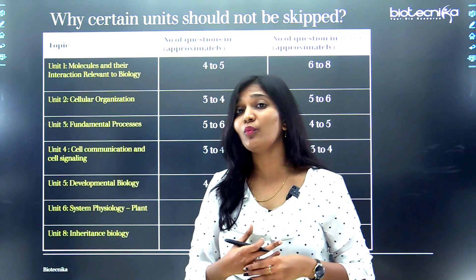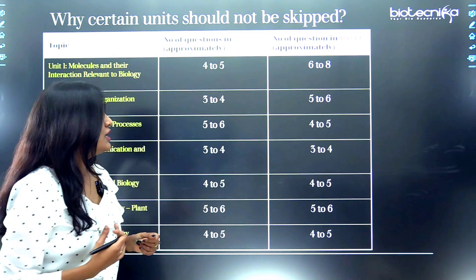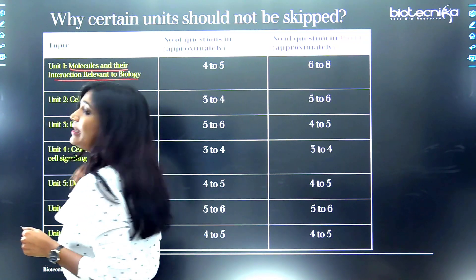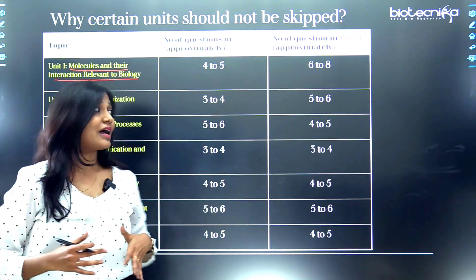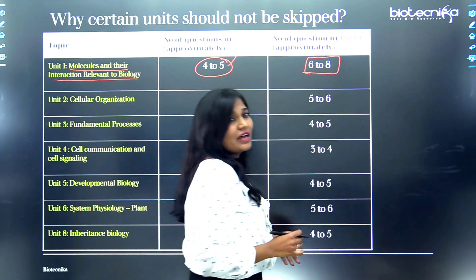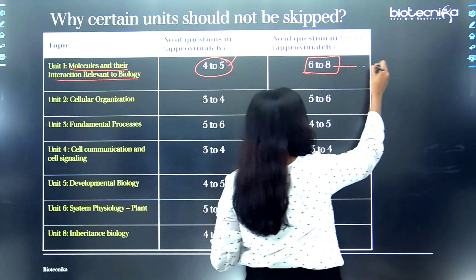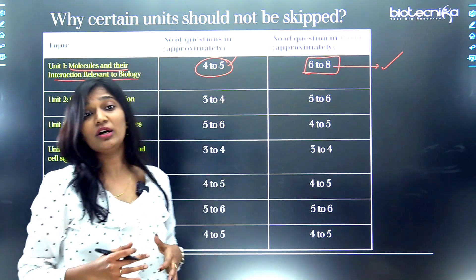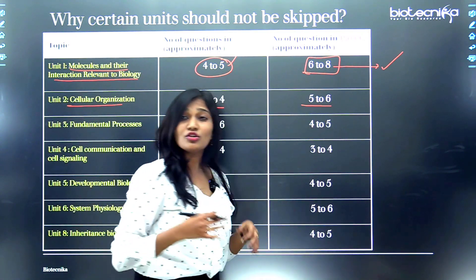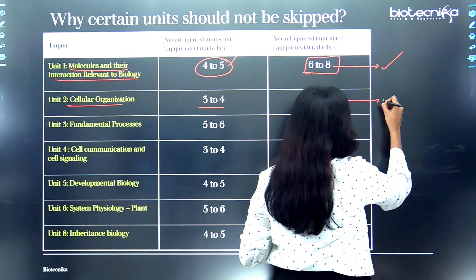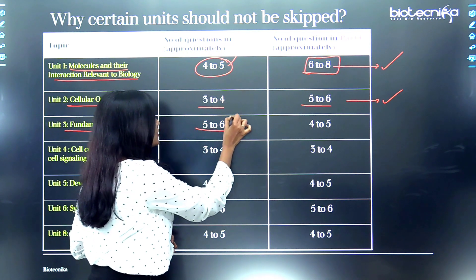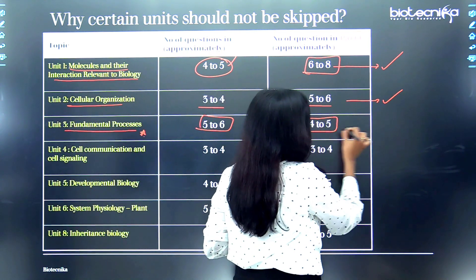Let's talk about why certain units shouldn't be skipped, based on their question weightage. Unit one — molecules and their interactions — will give you four to five questions in Part B and six to eight questions in Part C: a very promising chapter. Unit two — cellular organization — gives three to four questions in Part B and five to six in Part C. Unit three — fundamental processes — gives five to six in Part B and four to five in Part C.